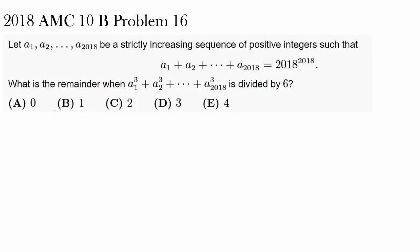Let's try to use modular arithmetic since we are examining remainder. We wish to find A sub 1 cubed plus A sub 2 cubed all the way to plus A sub 2018 cubed in mod 6, the remainder when we divide it by 6. Since we are looking at cubing numbers and examining that number in mod 6, why don't we try to experiment with cubing numbers and see how that changes the number in mod 6.